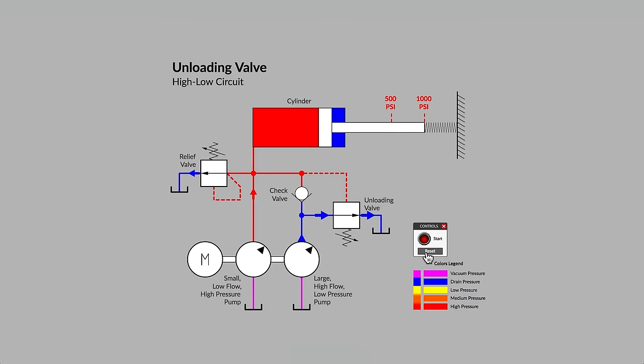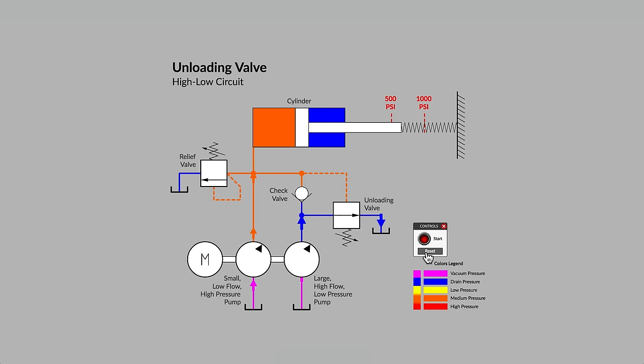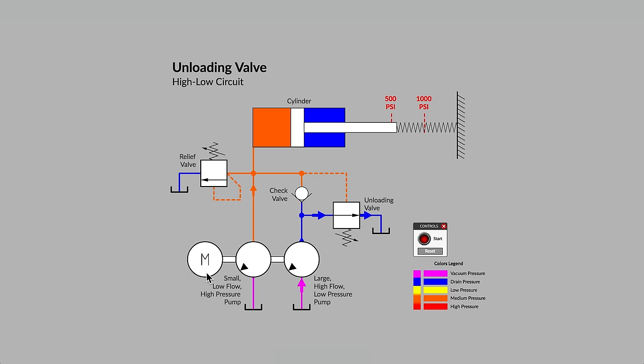It is not uncommon to find an unloading valve in use with fixed displacement pumps. An unloading valve can be used to create what is sometimes known as a high-low circuit. And it is also used to minimize the power required from the prime mover, an electric motor in this case, when the system pressure gets to a level that might cause the motor to stall.